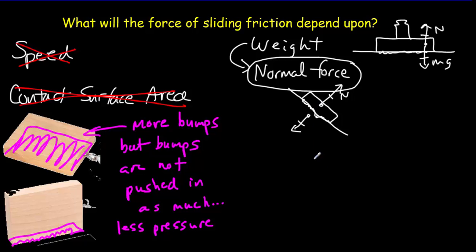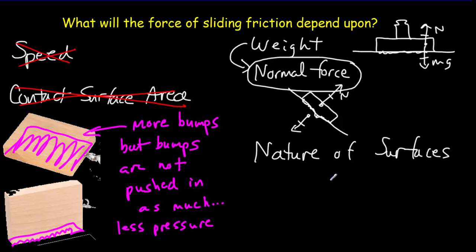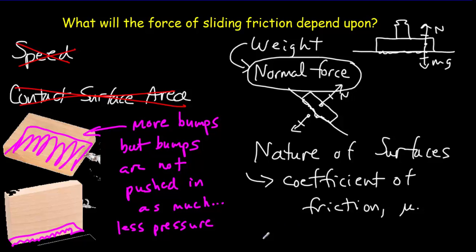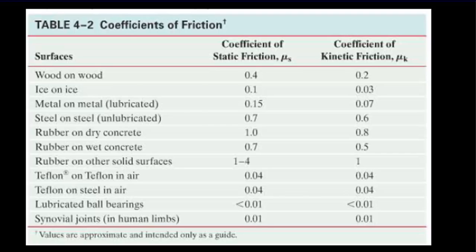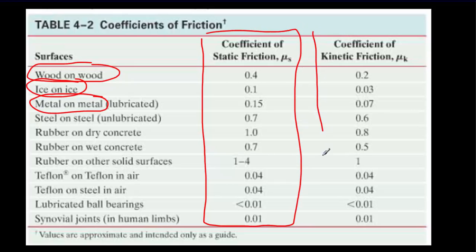The last factor would be the nature of the surfaces themselves. Wood on wood will have different bumps causing different friction than wood on snow. This is all accounted for by something called the coefficient of friction. We use μs for the coefficient of static friction and μk for the coefficient of kinetic friction. These coefficients only depend on the nature of the surfaces involved — whether it's wood on wood, ice on ice, metal on metal, etc. — and from those we can find both a static and a kinetic coefficient.